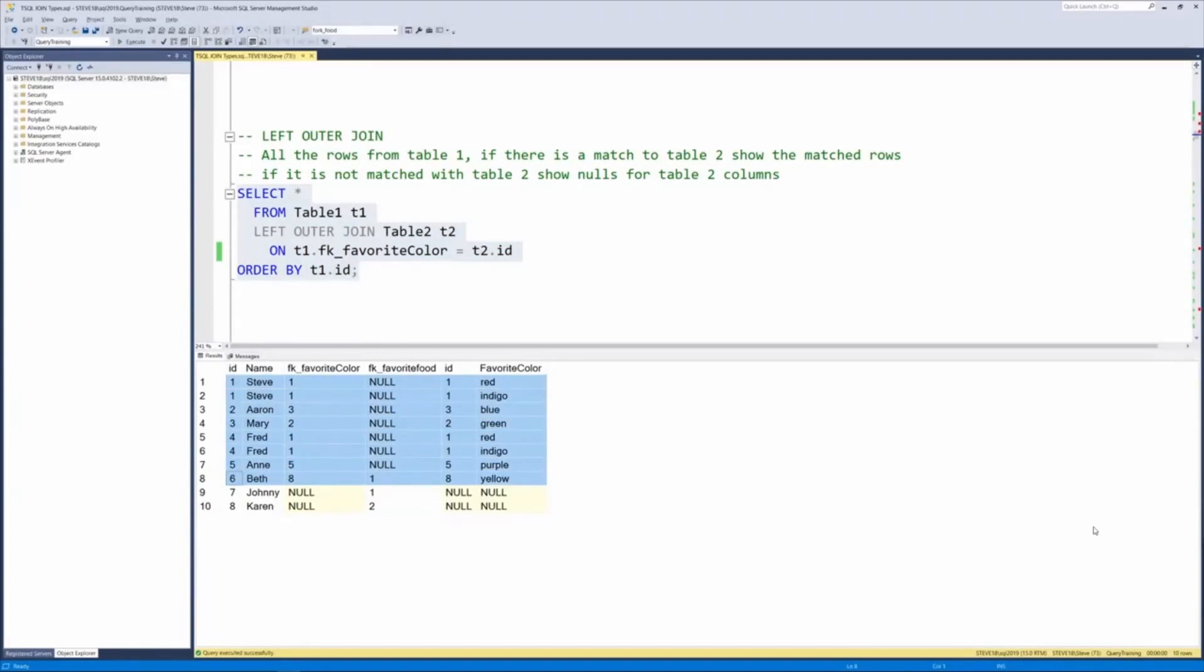But the two at the bottom, Johnny and Karen, who were missed on the inner join query, got included because of the use of the left outer join. And with that, because there's nothing they matched in the favorite colors table, the columns that come back from the favorites colors table just get simply put in there as null.